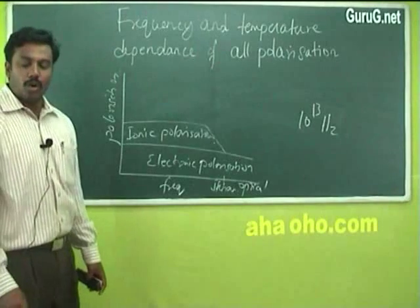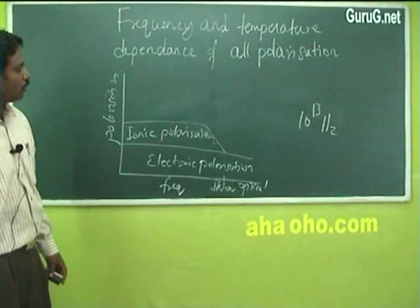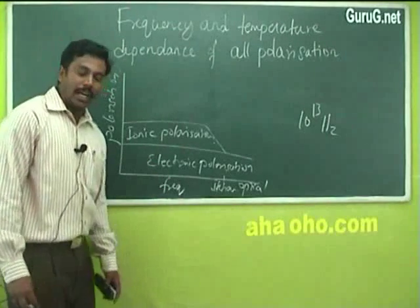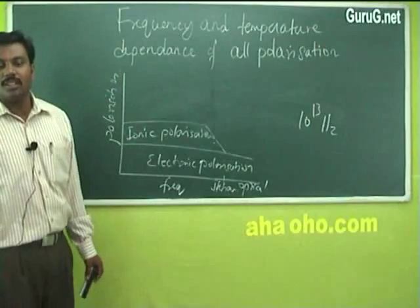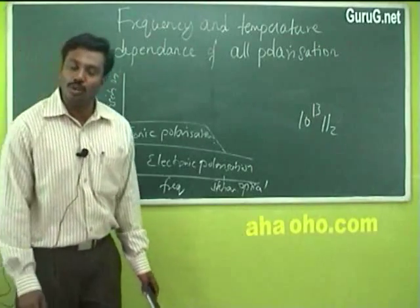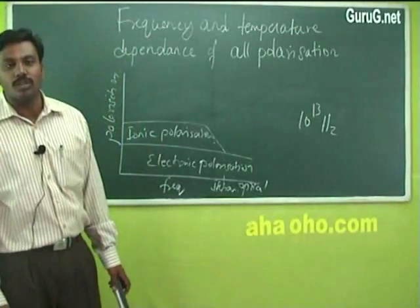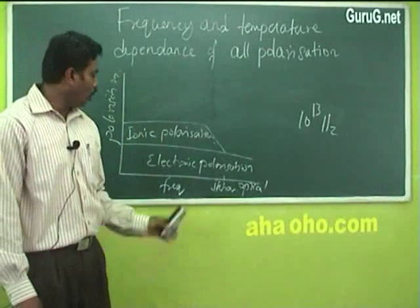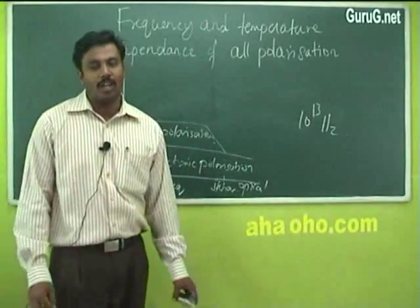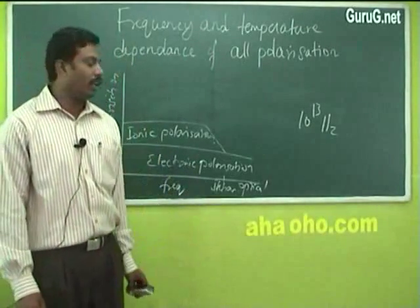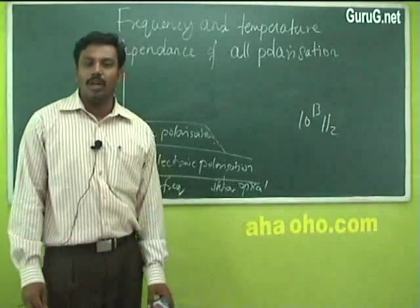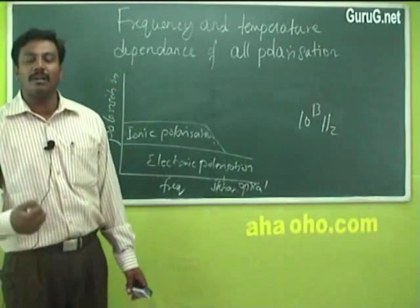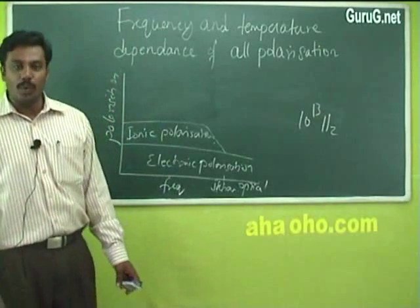Next comes orientation polarization. This orientation polarization is very much slower compared to electronic and ionic polarization, because it occurs only due to the presence of polar molecules in the dielectrics. This type of polarization takes place at very low frequency. Whereas in the case of liquid dielectrics, it may be a bit faster because randomization becomes faster in liquid crystals.